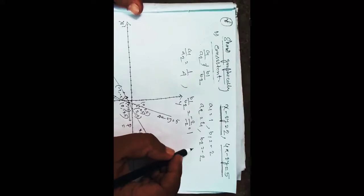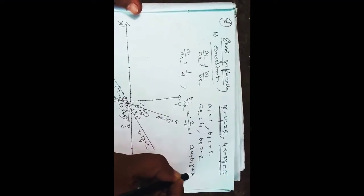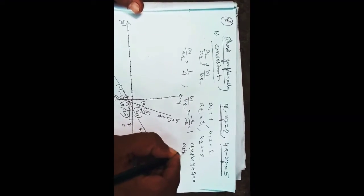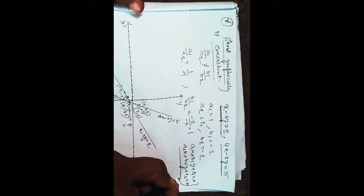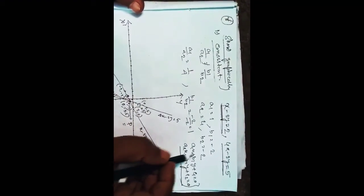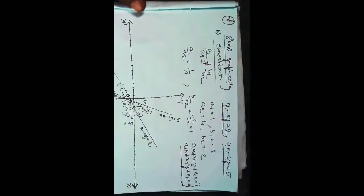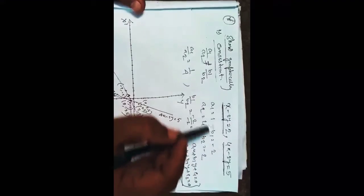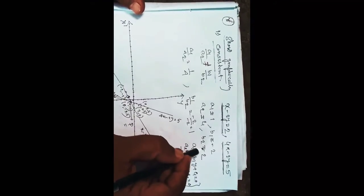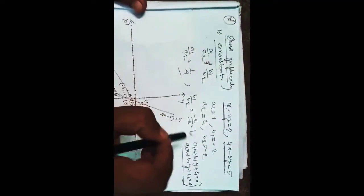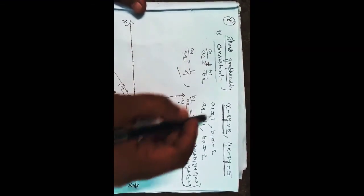If we take two straight lines a1x plus b1y plus c1 equal to 0 and a2x plus b2y plus c2 equal to 0, for consistency it is necessary that a1 by a2 should not be equal to b1 by b2. Here a1 is equal to 1, a2 is equal to 4, b1 is equal to minus 2, b2 is equal to minus 2. So a1 by a2 is equal to 1 by 4, b1 by b2 is equal to 1. Obviously a1 by a2 is not equal to b1 by b2, so it is consistent.